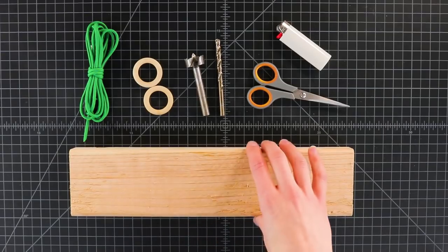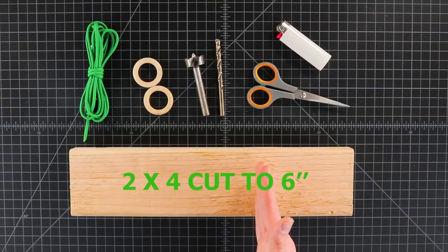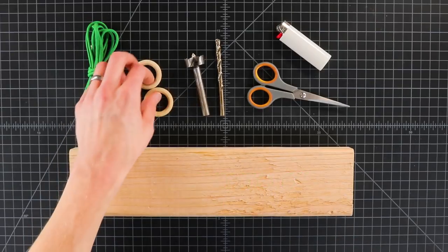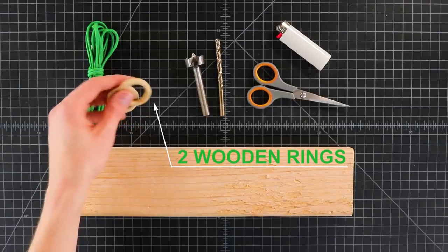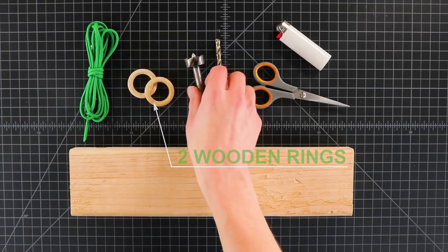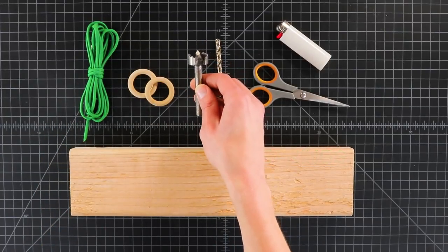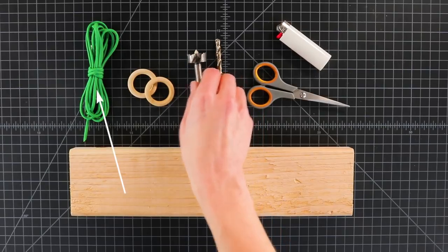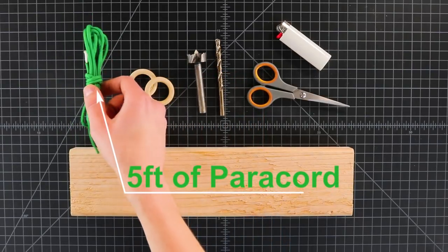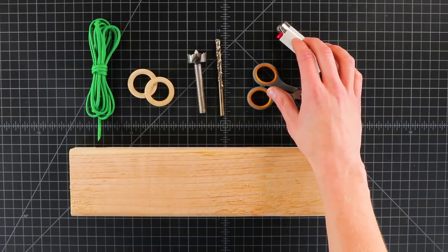We've got a 2x4 here. We're going to be cutting that down to about 6 to 8 inches. It's not exact. And then we've got two wooden rings that are new in our store along with a couple drill bits. You can find these at a hardware store. And then about 5 feet of paracord. And then of course our normal tools are scissors and a lighter.